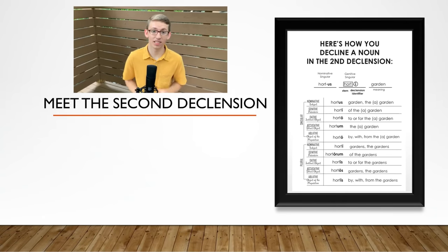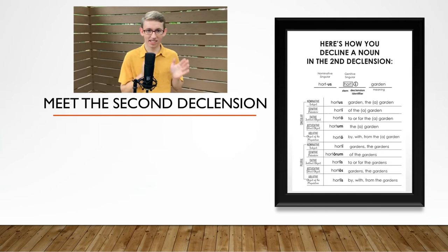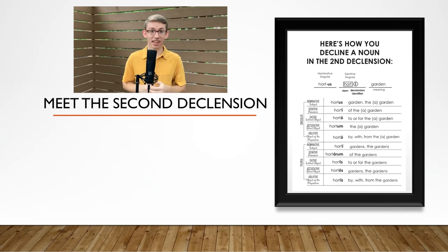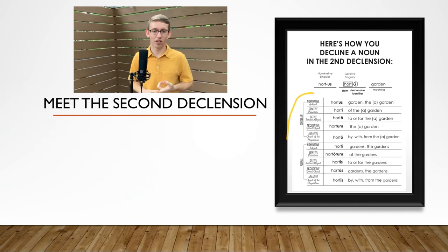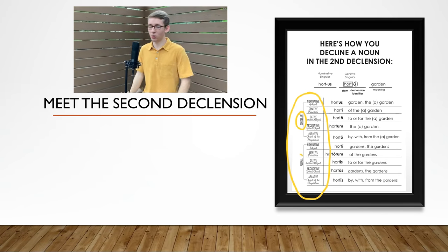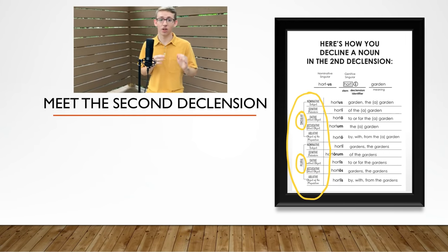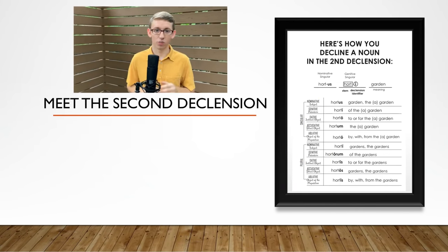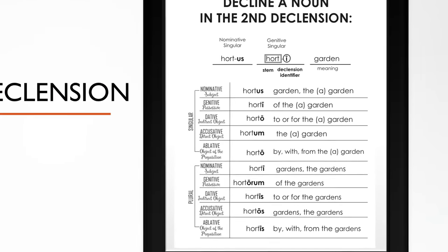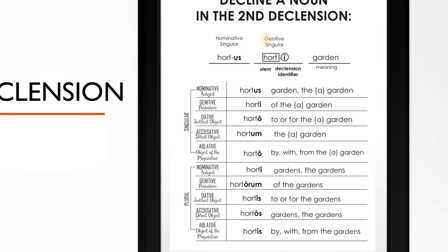We've done some practice in translation, and now we're moving on to a new declension — the second declension. Now don't be overwhelmed. I know it looks like a whole other declension, and it kinda is, but a lot of things are similar. We get to keep all of our cases — those stay the same for all declensions. The numbers stay the same. The endings are the only things that are changing. The way you tell if a noun is in the second declension is by again looking at that genitive singular, and looking for that little eye with a macron over it. And that's also where you can find the stem.